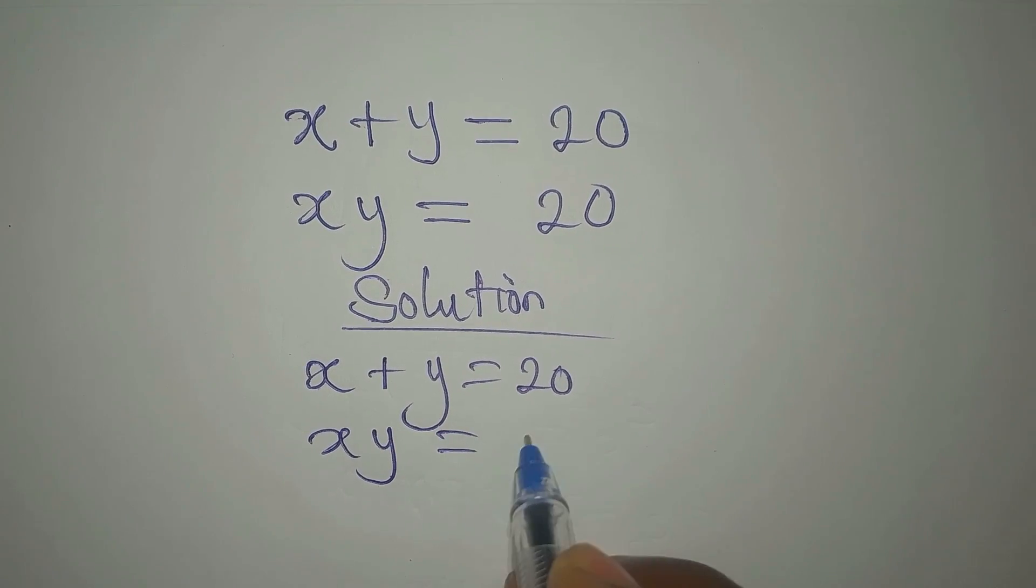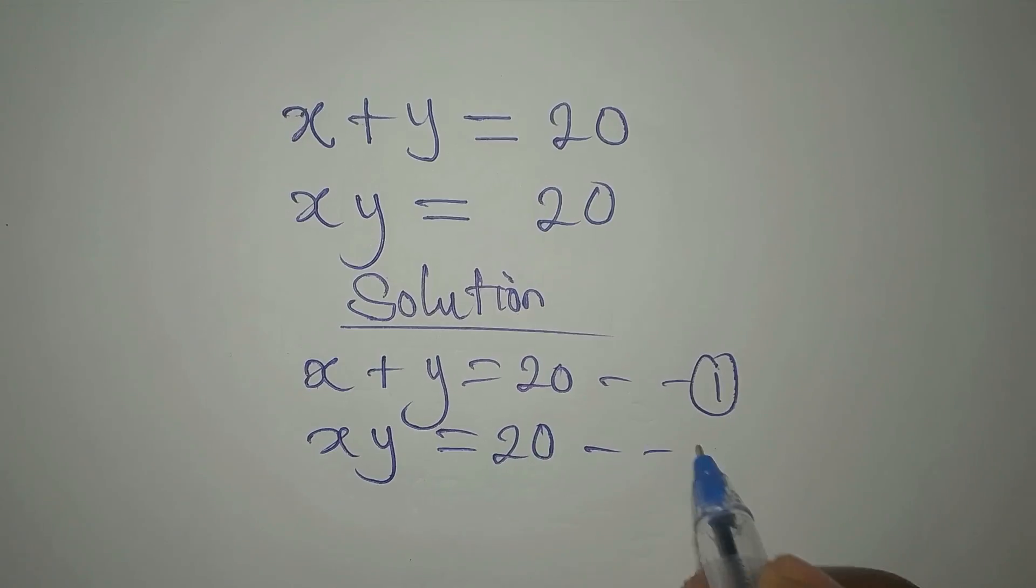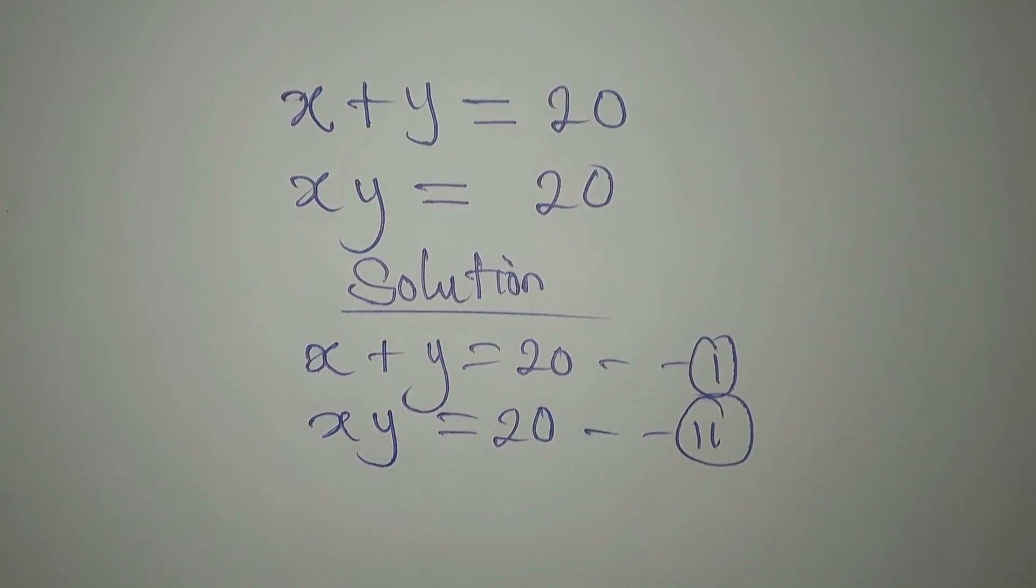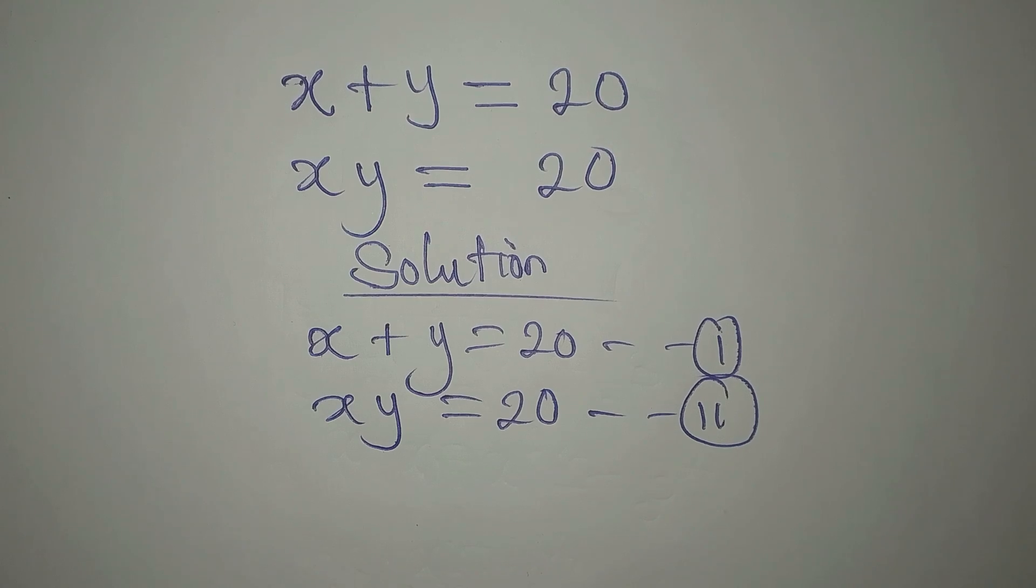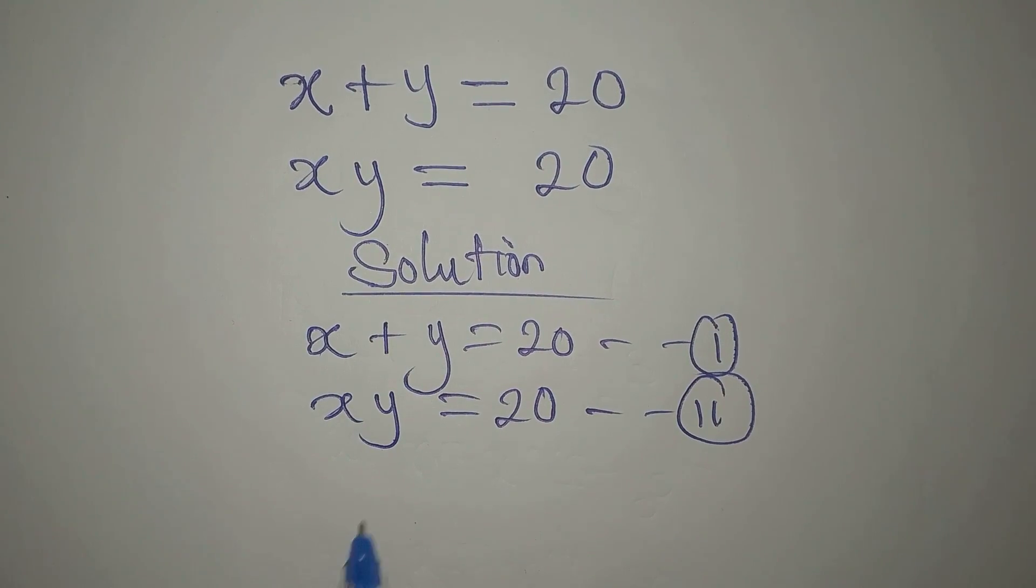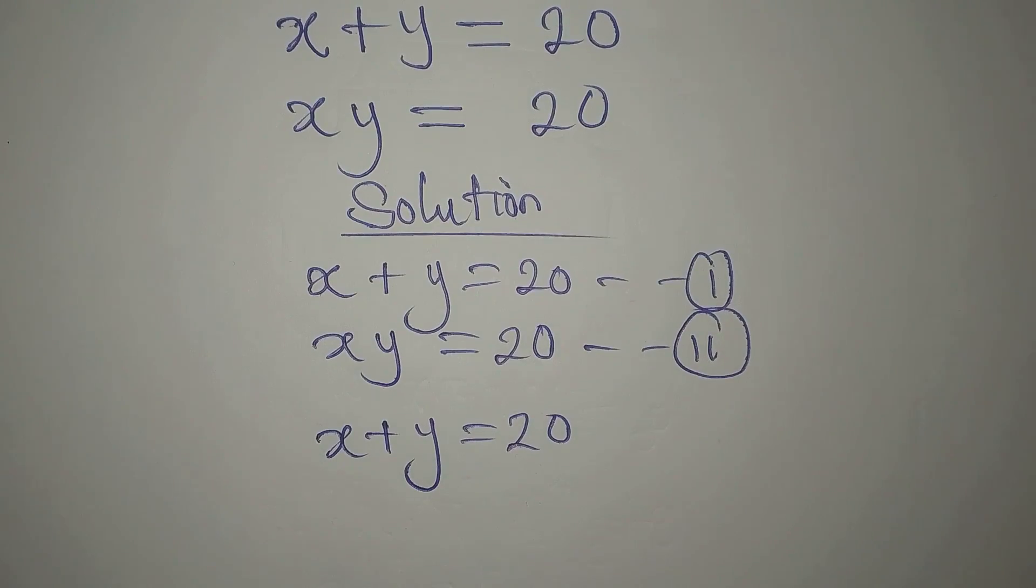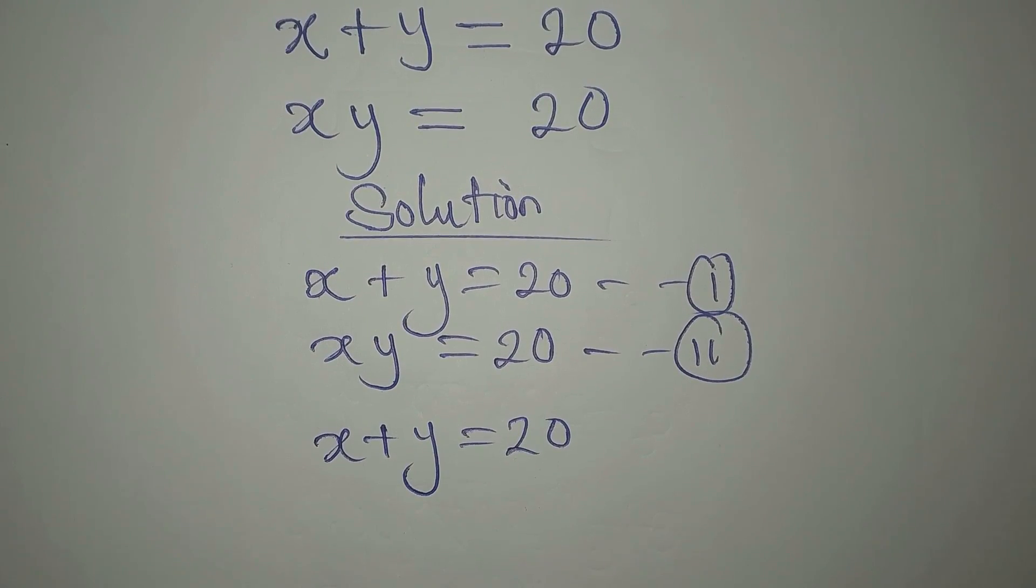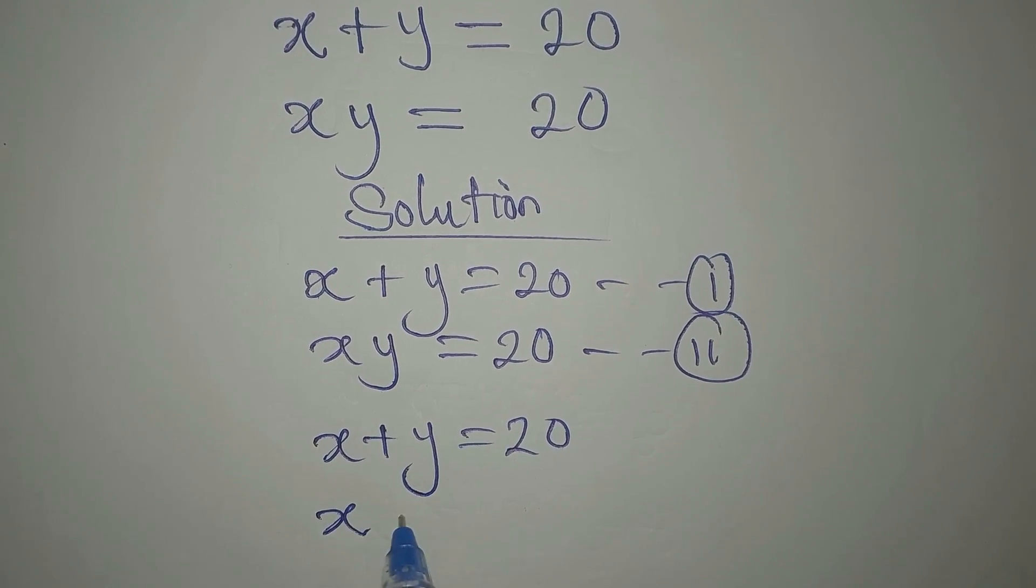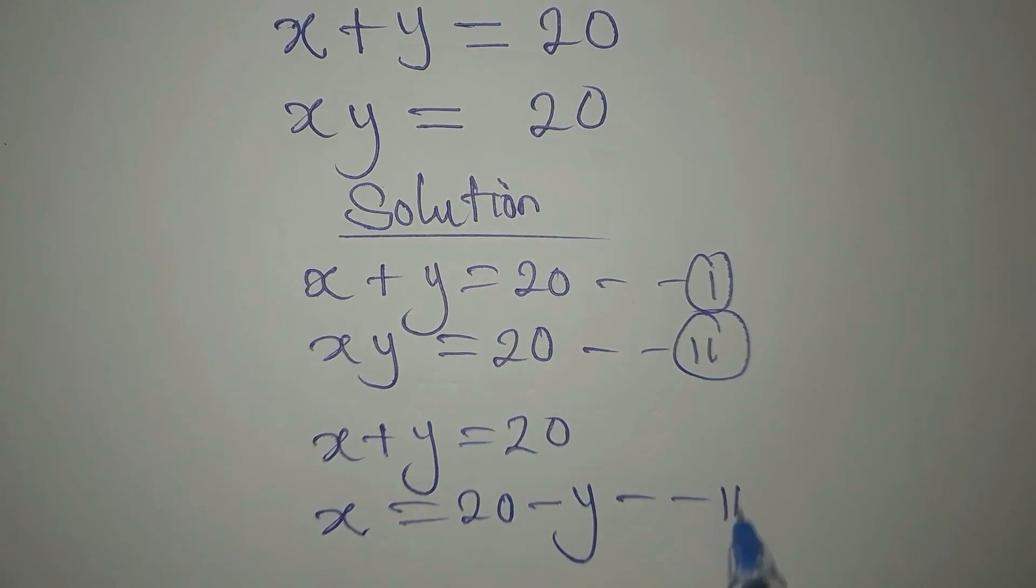This is our equation one that we want to solve: x + y = 20. This is equation two: xy = 20. We are going to solve this simultaneously. Now from equation one where we have x + y = 20, we can generate our equation three. Let x be equal to 20 - y, and we call this equation three.